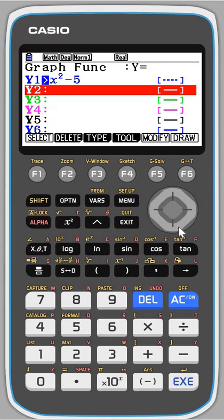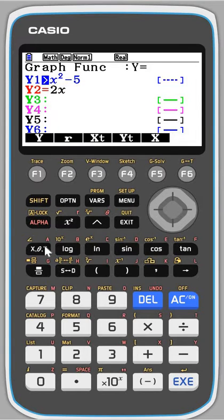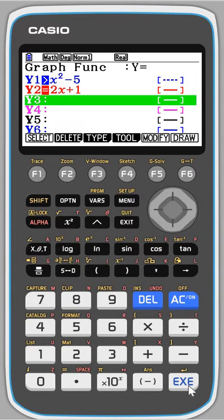OK, I'm now going to do y is less than or equal to 2x plus 1. So I'll do 2x plus 1, execute, and then press f3 for type and convert. And I want less than or equal to. So there we go.